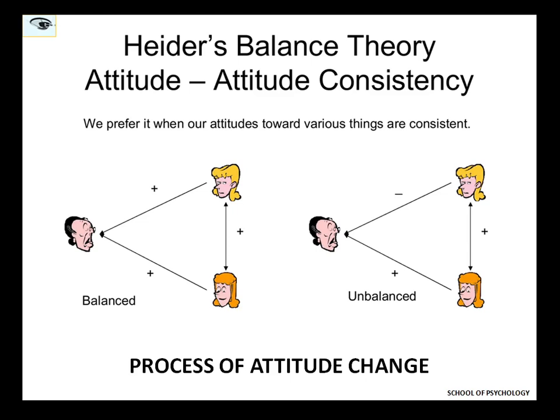Attitude change will definitely have to take place so that either there are three positive relationships or two negative and one positive in the triangle. Because it is a state of imbalance, a shift must be created to attain balance. This is what Fritz Heider was putting across — that attitude always changes because it tends to move from a state of imbalance to a state of balance. Thank you so much.